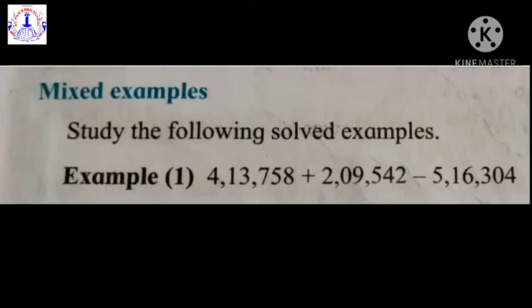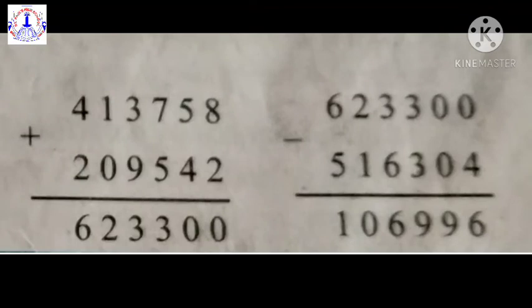Here you can see 4,13,758 is added to 2,9,542. Both these numbers are added, and whatever number we get from that, we have to subtract 5,16,304. When we add these 2 numbers, we get the answer 6,23,300.